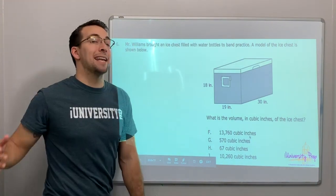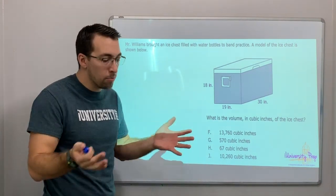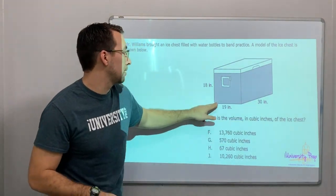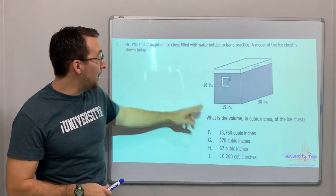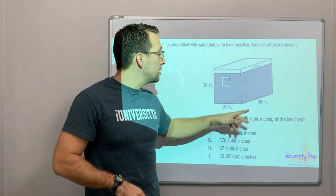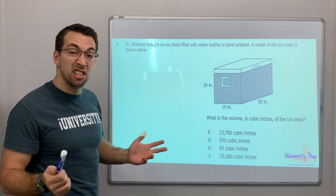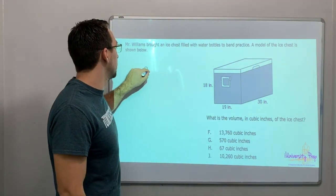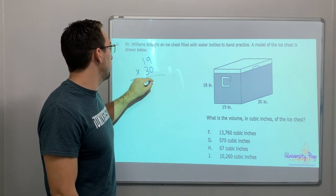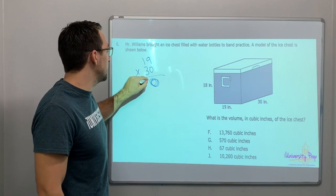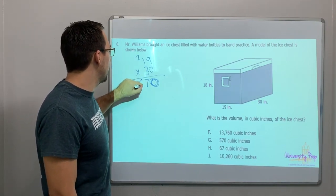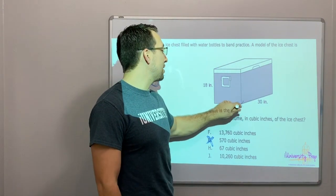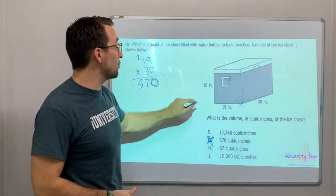Last question on the video. Mr. Williams bought an ice chest filled with water bottles and brought it to band practice. A model of the ice chest is shown below with dimensions: 18, 19, and 30 — height, width, depth. Volume is length times width times height, in cubic inches. So let's do 19 times 30. 30 times 19: add my 0, then 3 times 9 is 27, 3 times 1 is 1 plus 2 is 5 — that's 570. But we still have to multiply by 18 for volume.